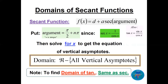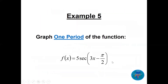The domain of secant is found the same way as for tangent, since both have cosine in the denominator. Set the argument equal to pi over 2 + n·pi, where n is an integer, and solve for x to get the vertical asymptotes. The domain is all real numbers except those vertical asymptotes.